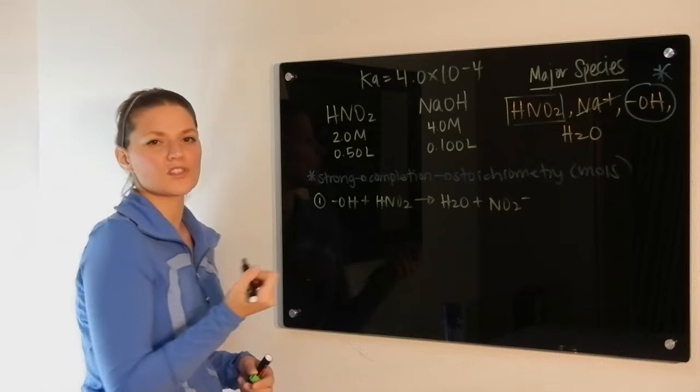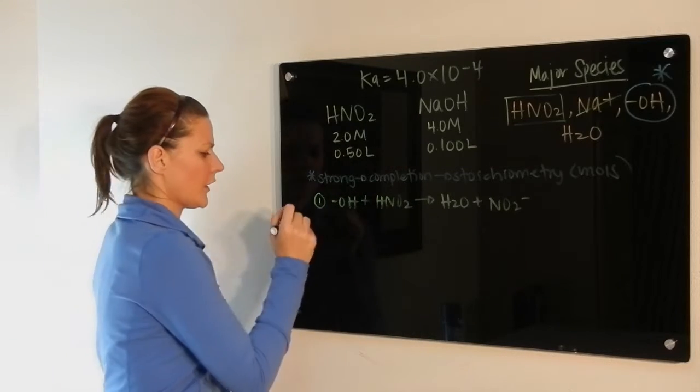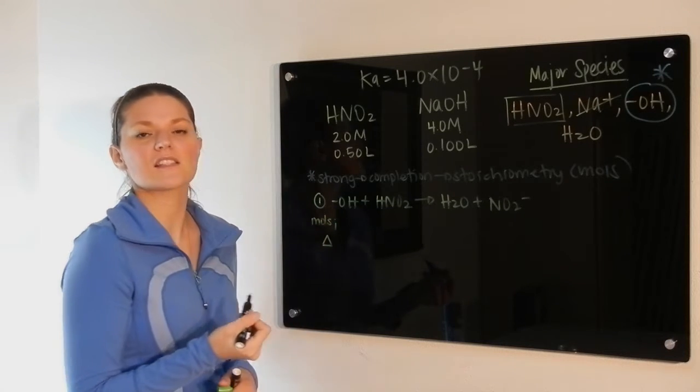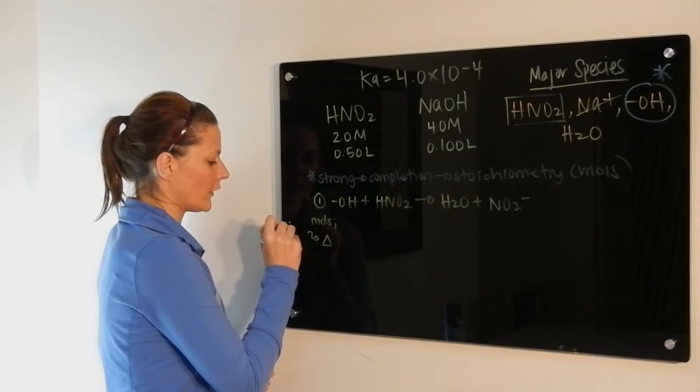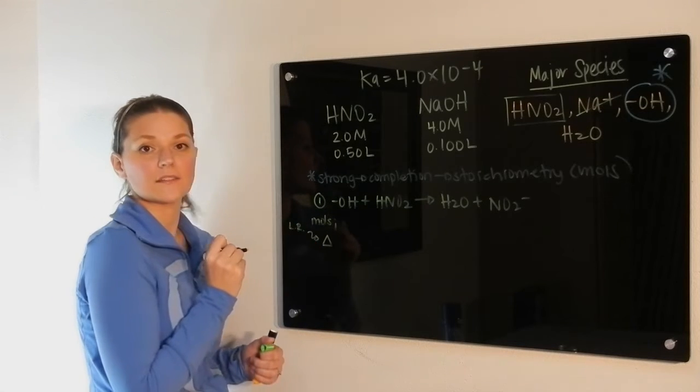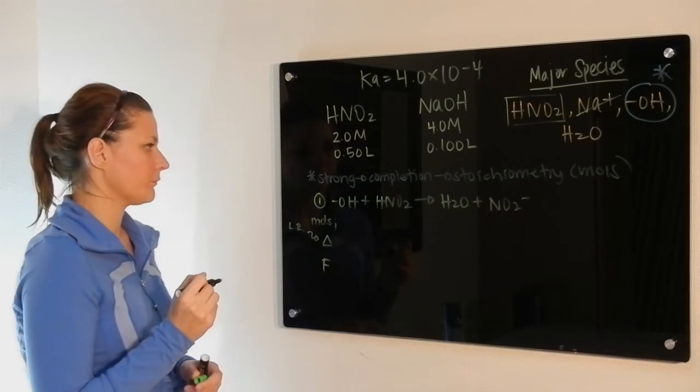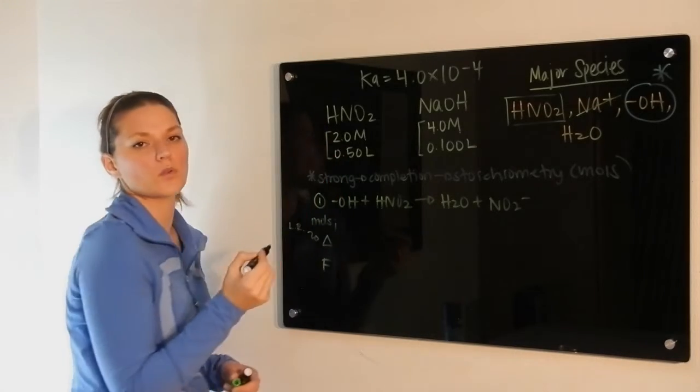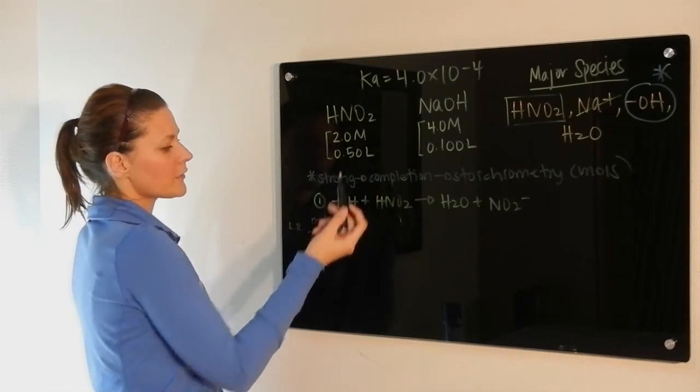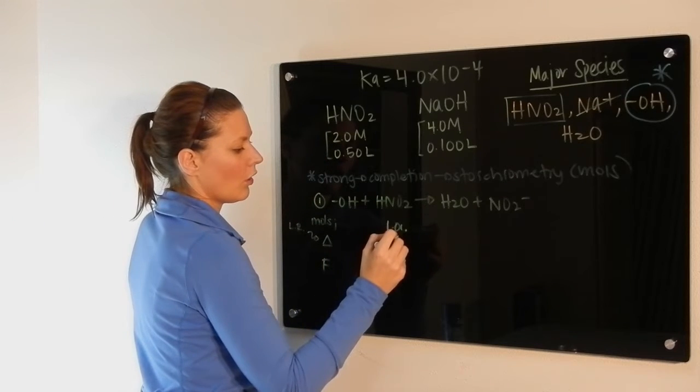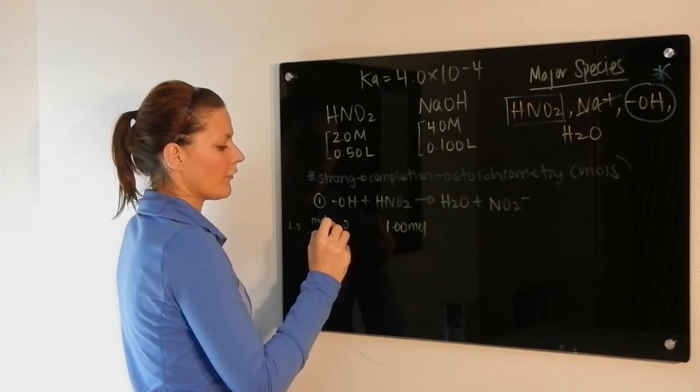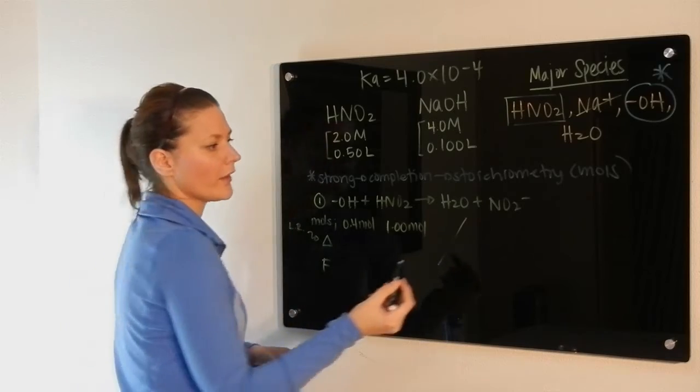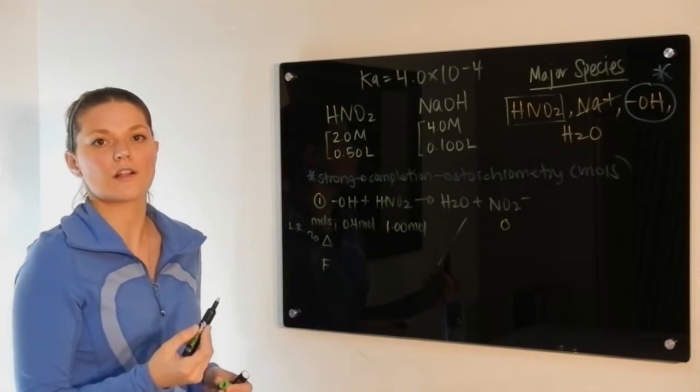Once again, we have to be in terms of moles. So we're going to do a modified ICE chart. So modified meaning here, it's going to be the initial moles. Then delta represents the change. This here is going to be based on your limiting reactant. And then we're going to have our final solution. If we look at the information above, we can solve for moles of hydroxide, and we can solve for moles of nitrous acid. So volume times molarity would give me one mole of nitrous acid, and here we would have 0.4 moles of hydroxide. We don't care at all about water because it's a liquid, and we don't have any initial starting concentration of our nitrite.